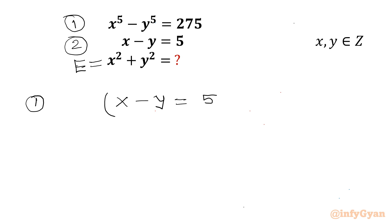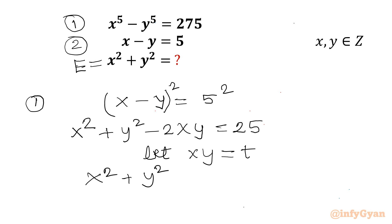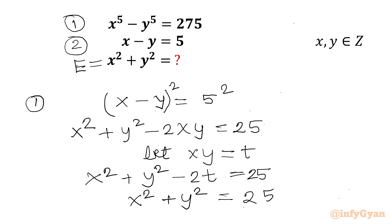Let us consider squaring both sides. Applying the a minus b whole square formula: a squared plus b squared minus 2ab equals 25. Now let us consider the substitution xy equal to t. So I can write the equation as x squared plus y squared minus 2t equals 25, or x squared plus y squared equals 25 plus 2t. This I will call equation number 3.